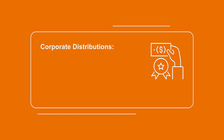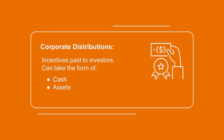Have you ever invested in a company before? Maybe you've bought shares through an investment brokerage or even used an app. Many companies will incentivize you to keep your investment with them by offering you some kind of reward. This reward can come in various shapes and sizes — things like cash, assets, or even additional shares in the organization. Essentially, the business is sharing its profits with the shareholders. Companies need to be strategic about how they choose to distribute these profits and understand how it impacts the business and financial statements. Investors also need to understand their options when it comes to these corporate distributions so they can make smarter investment decisions in the long run.